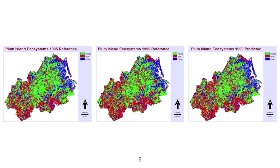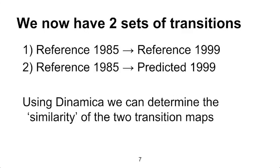It should be noted that we utilized Idrisi Selva to create the maps shown here for the sake of clarity, but utilized the direct output files from Dynamica. From these three maps, we have two sets of transitions which can be compared by the software. These transitions can be termed the reference transition between the 1985 and 1999 reference maps, and the simulated transition between the 1985 reference map and the 1999 predicted map.